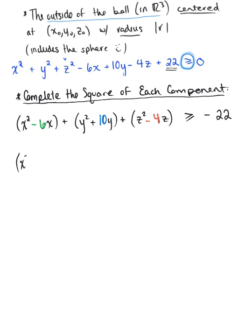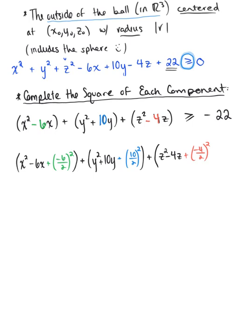So let's complete the square for each component. We'll have x squared minus 6x. Now remember to complete the square, we're going to need to add half of that constant squared to both sides of the inequality. So I now have plus y squared plus 10y, and we're going to add half of 10 squared to both sides. Doing the same thing for the z component: z squared minus 4z, and we are going to add plus (minus 4 divided by 2) squared.